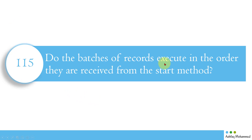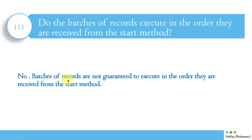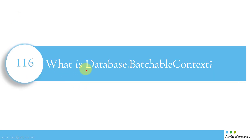The next question is: do the batches of records execute in the order they are received from the start method? The answer is no — batches are not guaranteed to execute in the order they are received from the start method. Your logic in the execute method should never depend on the sequence of records. You should never write logic assuming you will receive records in a specific sequence.